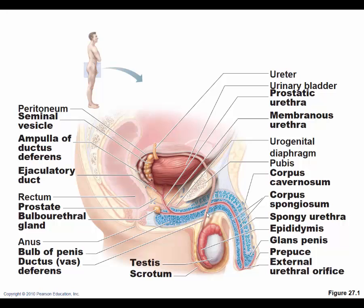Looking at the duct system: sperm production begins in the seminiferous tubules, then moves to the epididymis, then to the ductus deferens, which goes up over the bladder and becomes the ejaculatory duct. The seminal vesicle secretes its contents into the semen, and then it continues into the urethra. Normally this passageway carries urine, but during intercourse and ejaculation, semen passes through here.